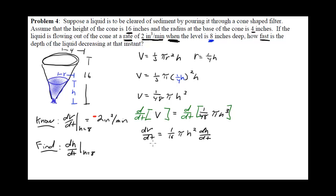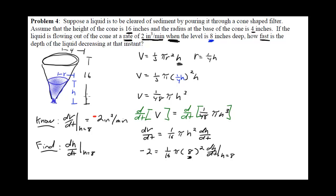Now we plug in what we know and solve for what we don't. dV/dt = -2, and h = 8 at the snapshot in time we're interested in. Some people ask why not plug in 8 earlier — you can't do that because plugging in 8 from the beginning would mean h is constant throughout the problem, but h is actually decreasing. You can only plug in h = 8 after taking the derivative, because now it's capturing just that instant in time.